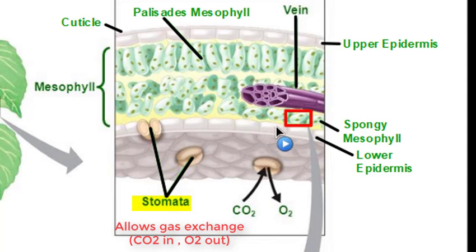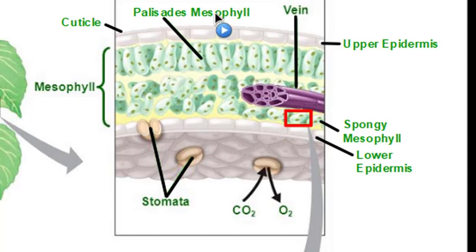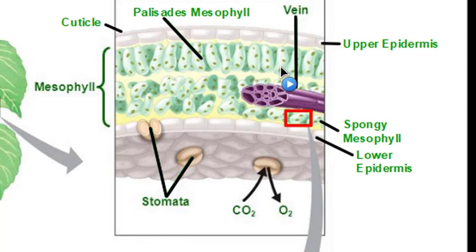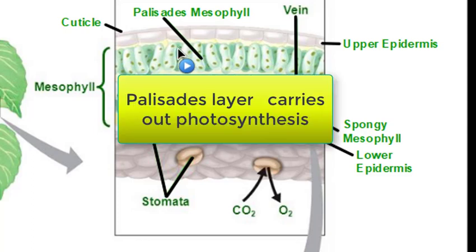Once you get through the epidermal layers you reach the middle layer called the mesophyll, which is broken into two parts: the palisades mesophyll and the spongy mesophyll. The palisades mesophyll is located at the top and is a densely packed layer of elongated cells filled with chloroplasts. These cells are positioned near the top of the leaf where sunlight strikes, and the primary function of the palisades mesophyll is to carry out the majority of photosynthesis inside the leaf.